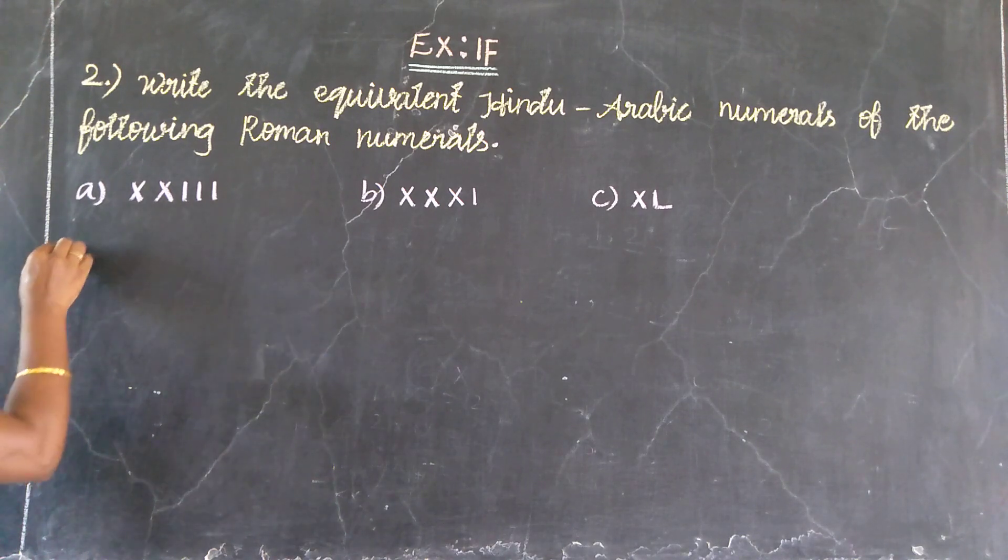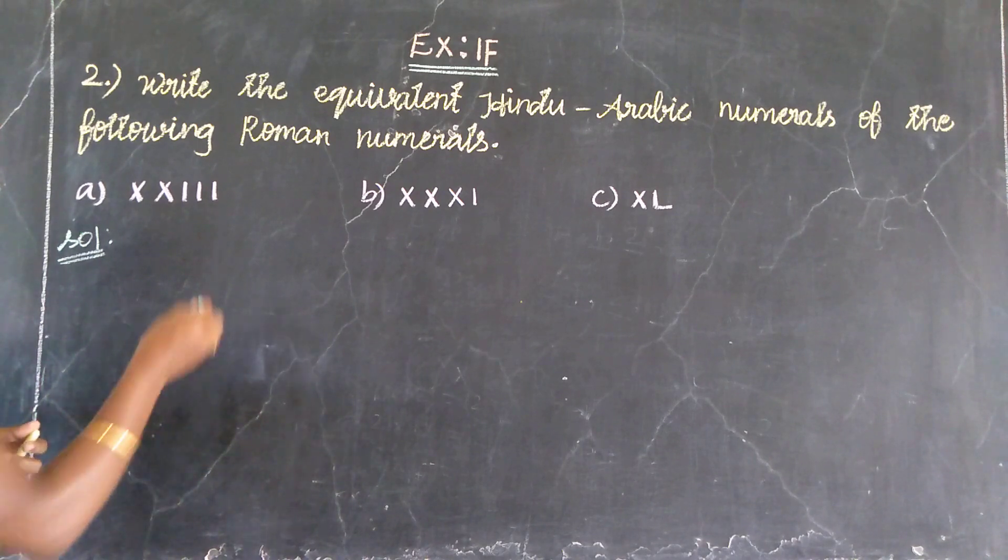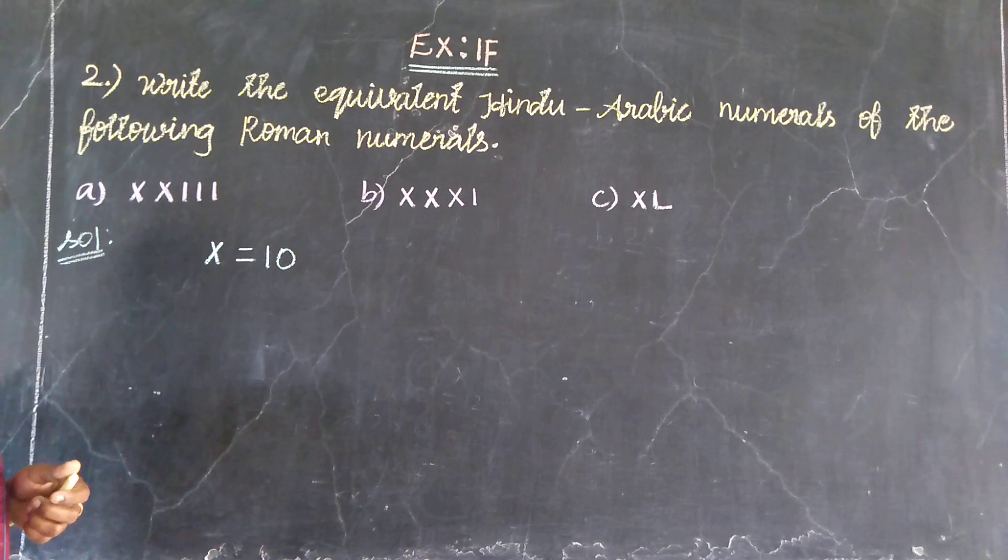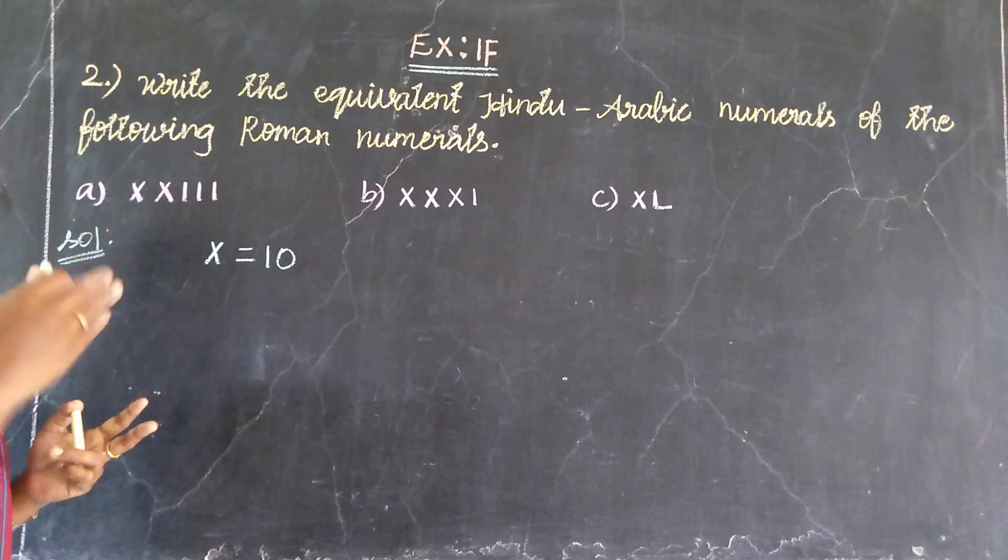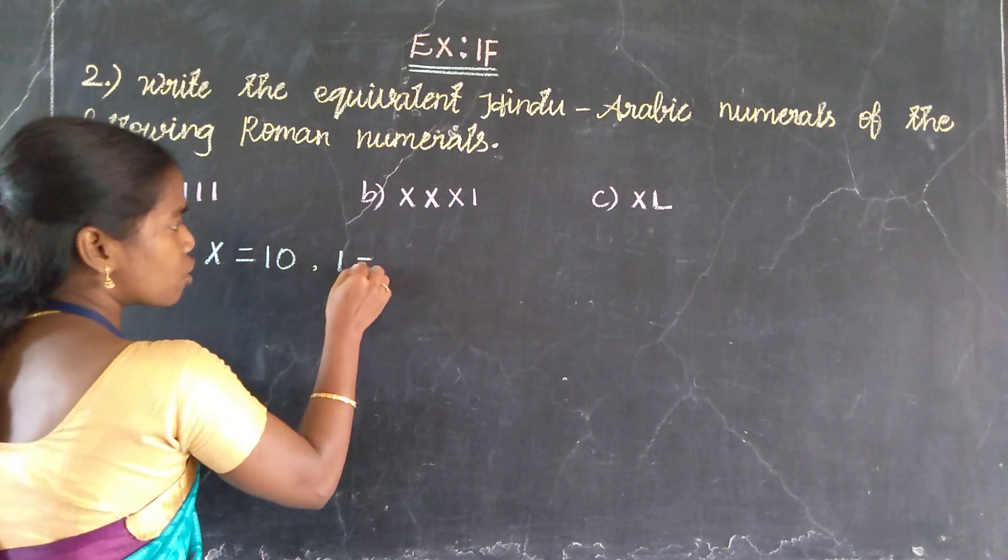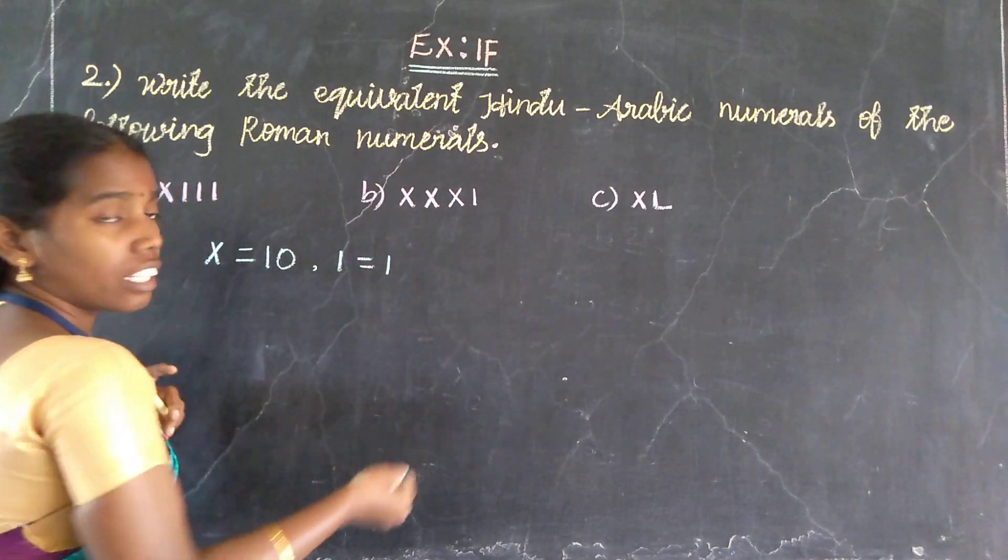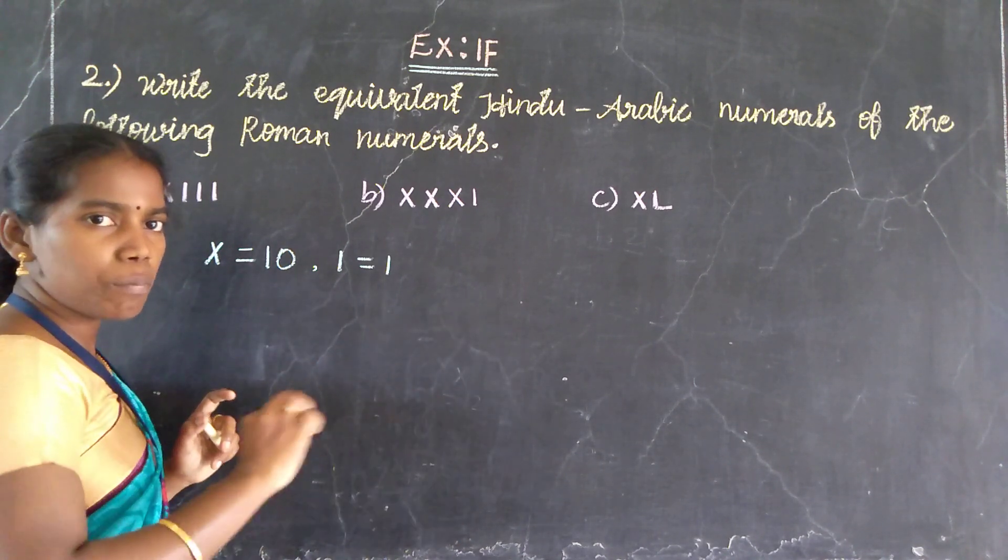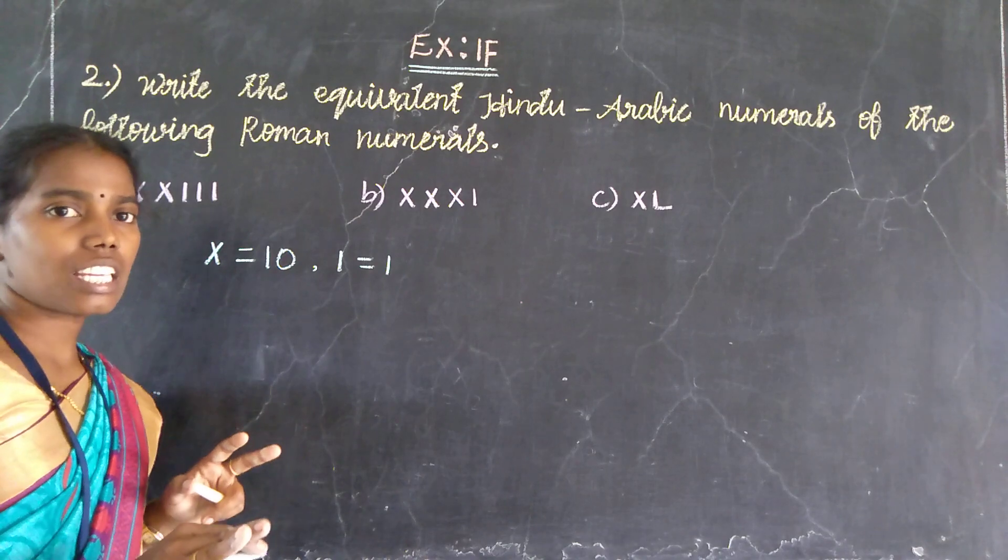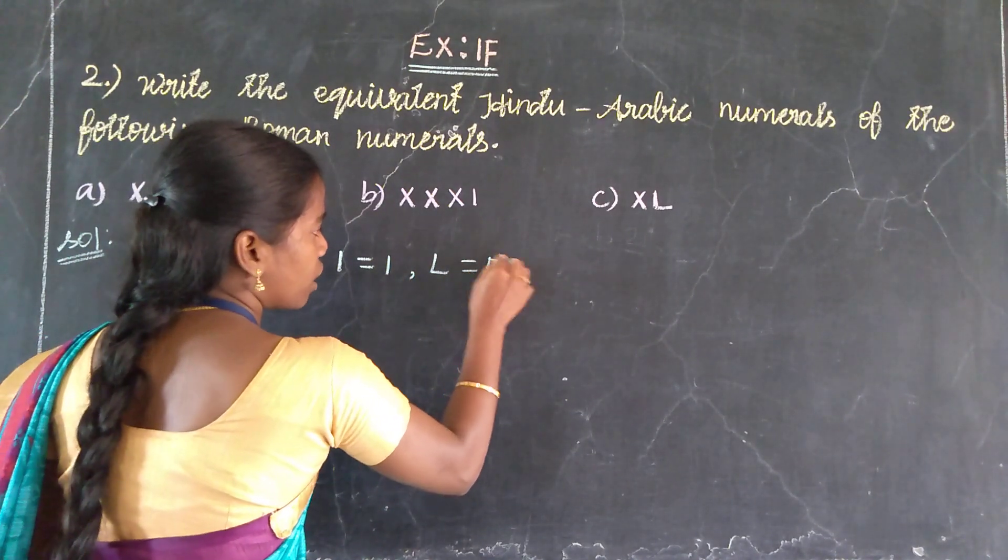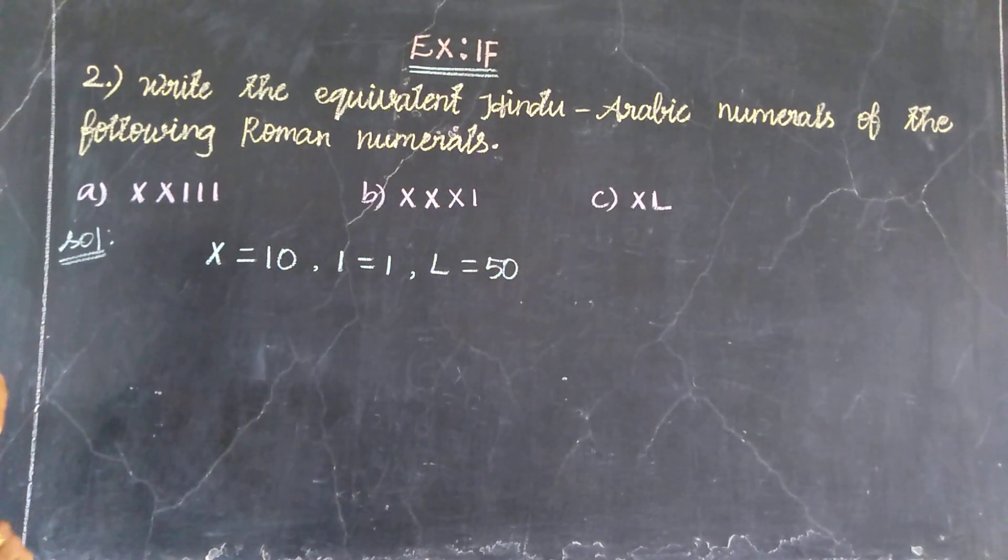Then, solution. X, Roman into Arabic numbers, X which is equal to 10. As usual, I, I is equal to 1. Double I is 2, triple I is 3. I, V is 4. Then L, which is equal to 50. So in three problems, in the three values are used.